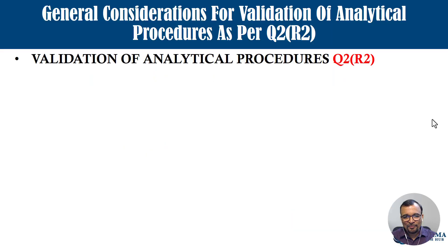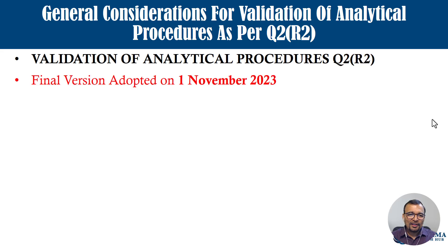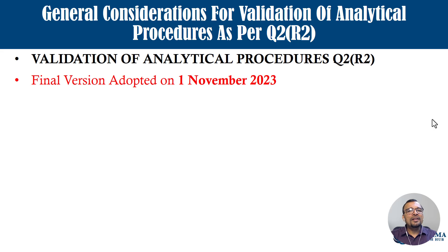Good afternoon everyone. Today's topic is relevant to recent updates from the ICH guidelines related to analytical method validation. The Q2(R1) has now become Q2(R2). The final version was adopted in November 2023, and as part of this video series we'll try to understand what the updates are according to Q2(R2), the second version of analytical procedure validation.